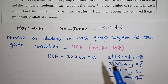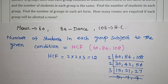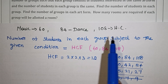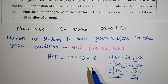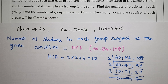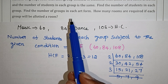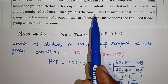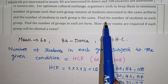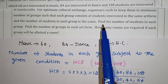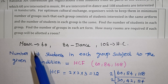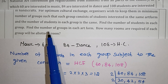So all students — 60, 84, and 108 — are divided into groups of 12 students each. Each group has 12 students. The first question — find the number of students in each group — is complete.